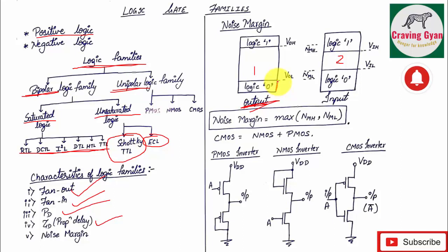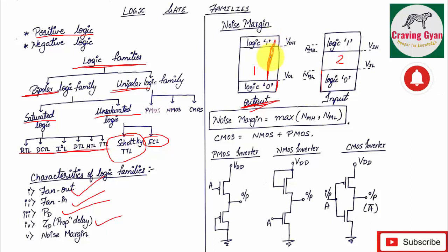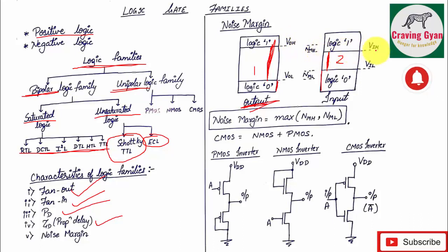Less than VIL is rounded off to logic 0. In between VOH and VIH, the logic you are getting is an invalid logic. Between VIH and VIL, whatever values you are getting are invalid. Noise margin is defined as the difference between VOH and VIH, or the difference between VIL and VOL.